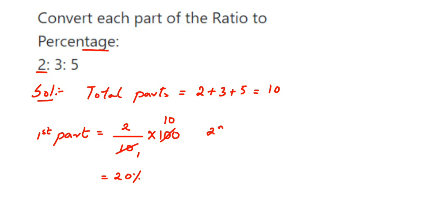So the second part will be, out of 10, how much is the second part? Three parts are the second one. So we're going to find out the percentage, so multiply with 100. Same thing – cancel 10 and 100, will get 10. So 3 into 10 is 30, so 30 percentage.